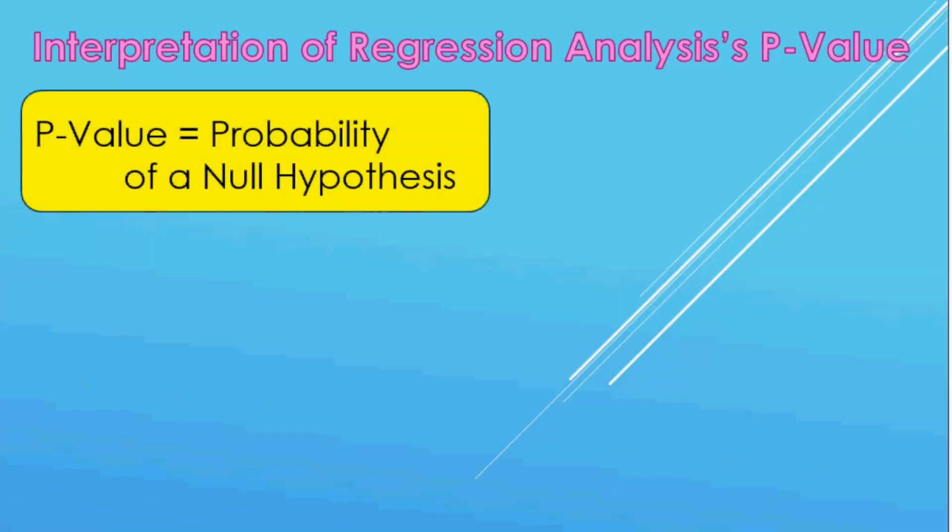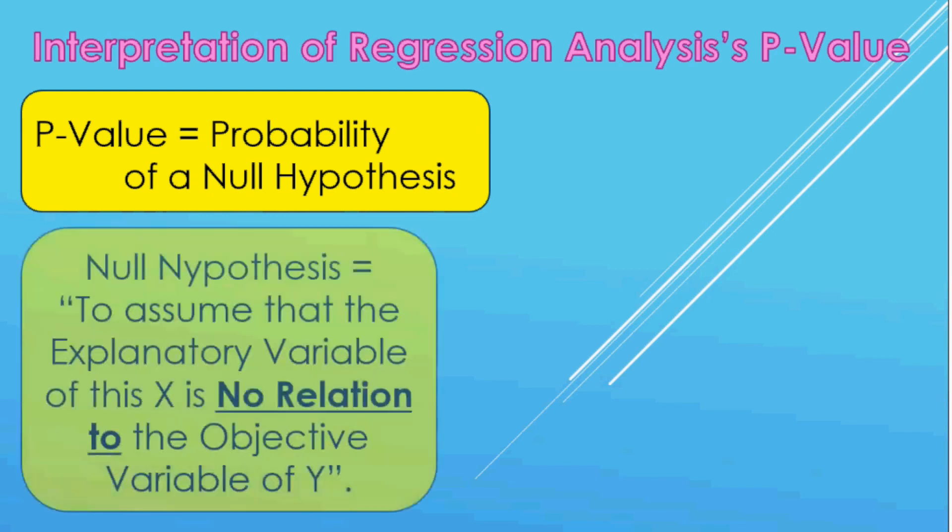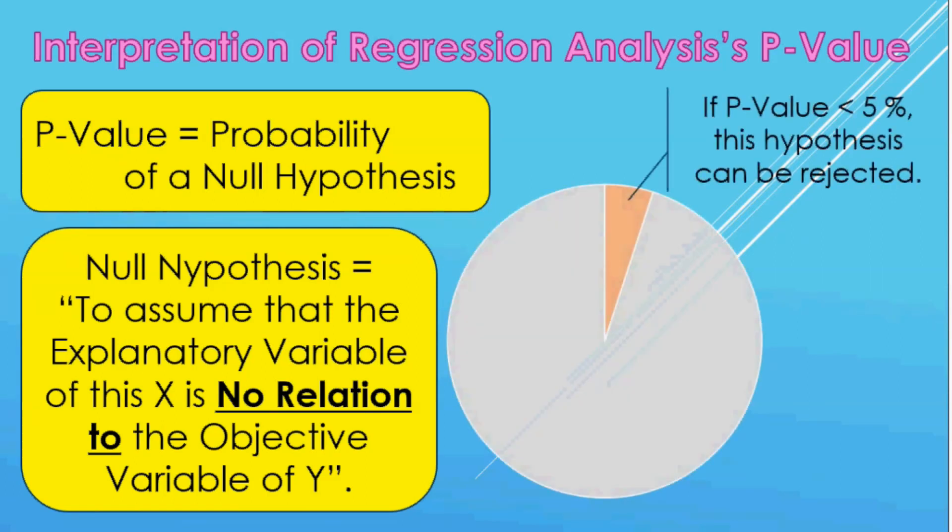What is that? The null hypothesis in regression analysis is to assume that the explanatory variable of this x is no relation to the objective variable of y. Generally, if this percentage is less than 5%, this null hypothesis can be rejected.